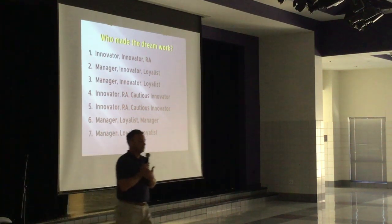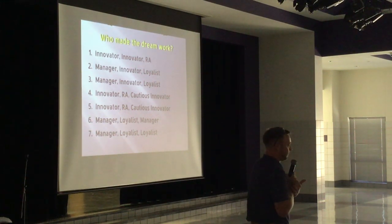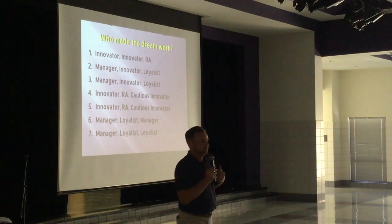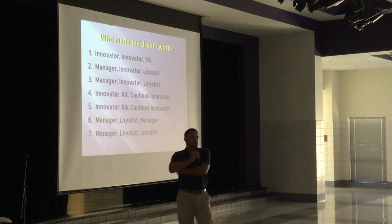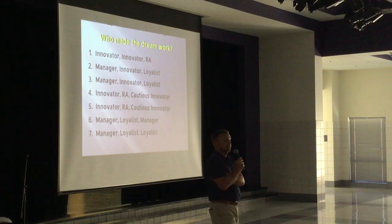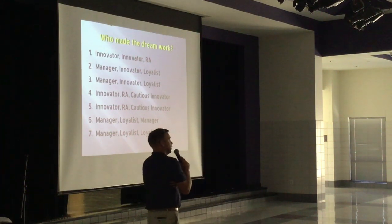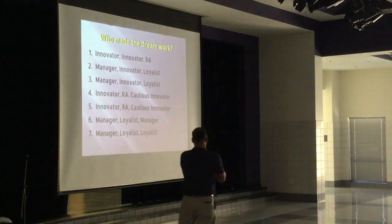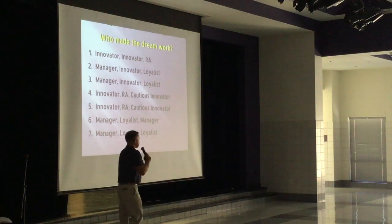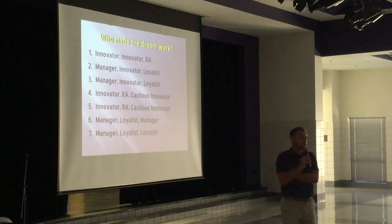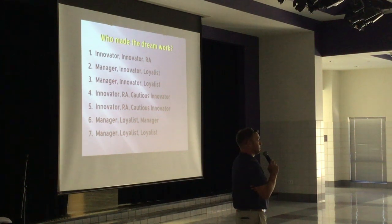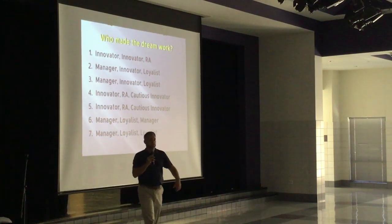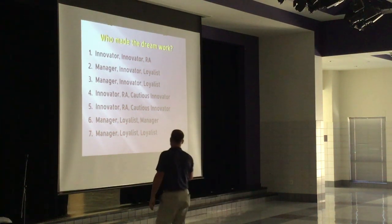Then you have the innovator, random actor, cautious innovator group. I wouldn't necessarily put two cautious innovators with a random actor, but if they have an innovator with them, this group is going to work okay — it's just not going to be that efficient. The innovator will come up with the idea, the cautious innovator is going to think through it from ten different directions, and the random actor is just going to be having fun and enjoying it. It may take them a little bit longer. Then you're looking at manager or loyalist-manager: you definitely don't want three managers in a group, but two can work together pretty well. And manager with two loyalists — they're going to get it done quick.